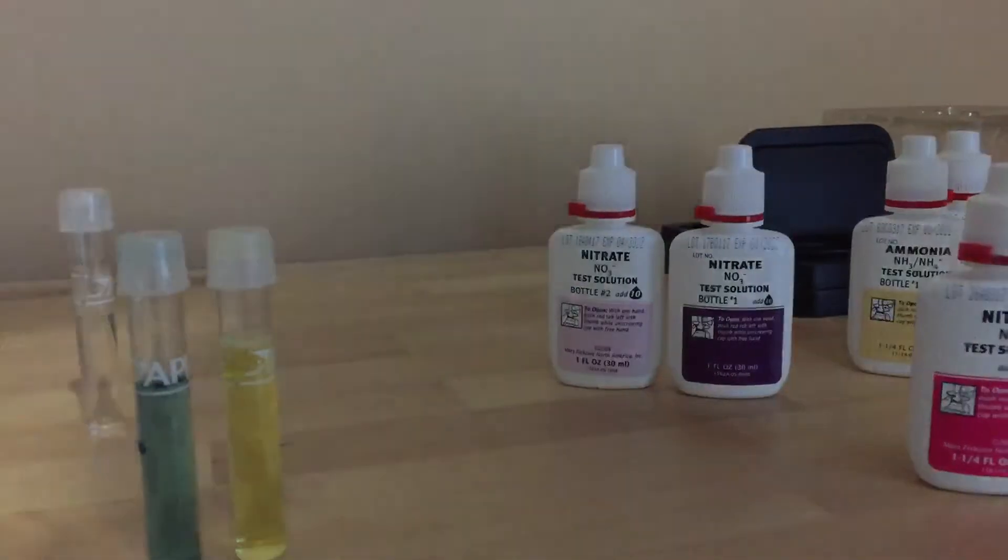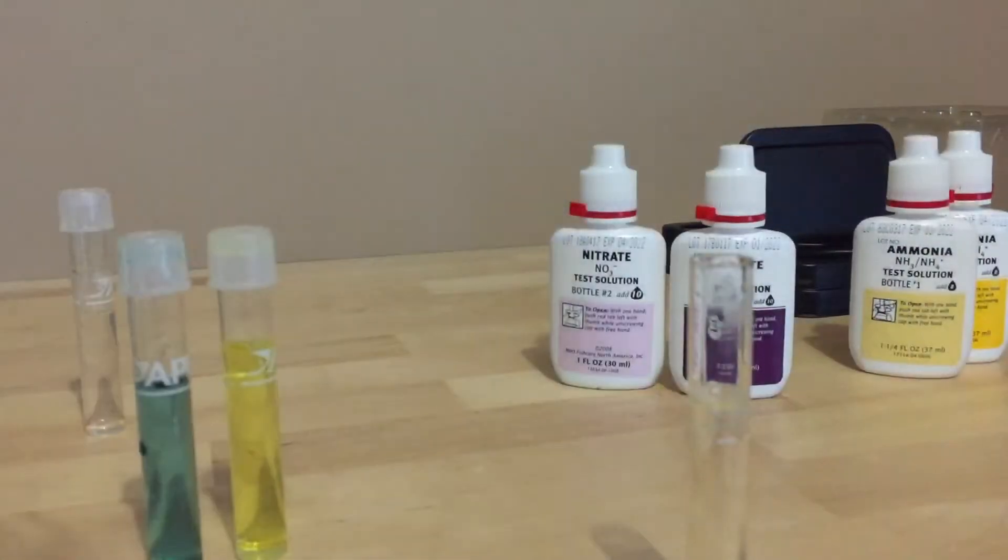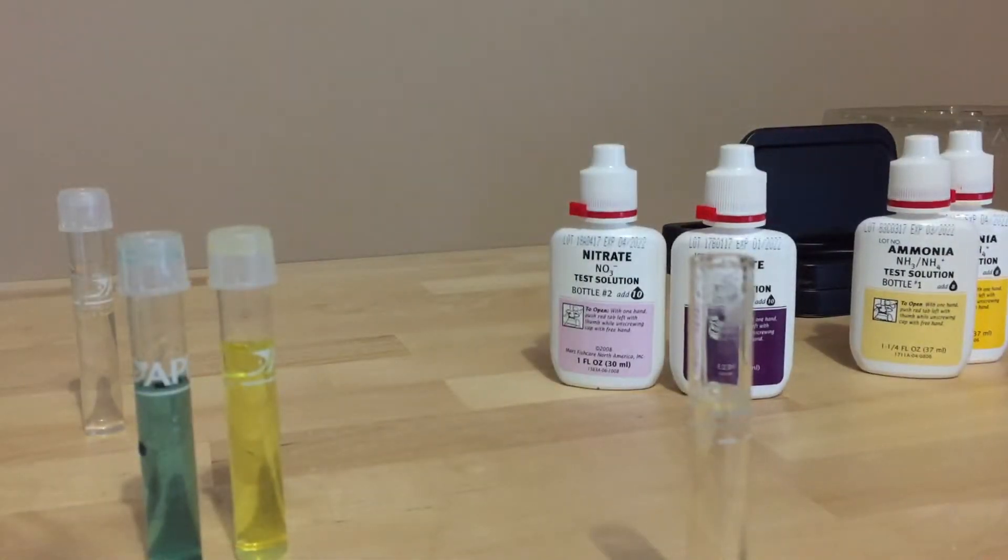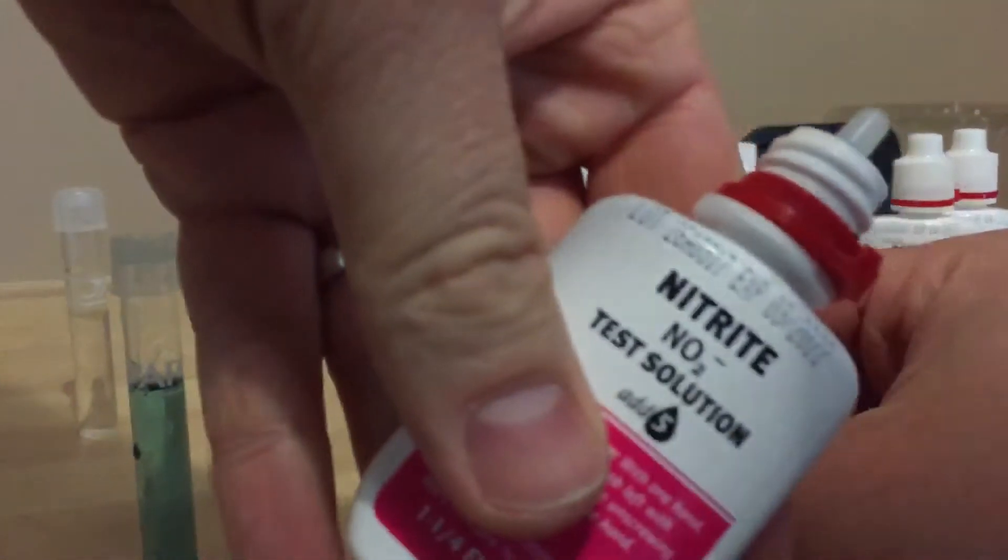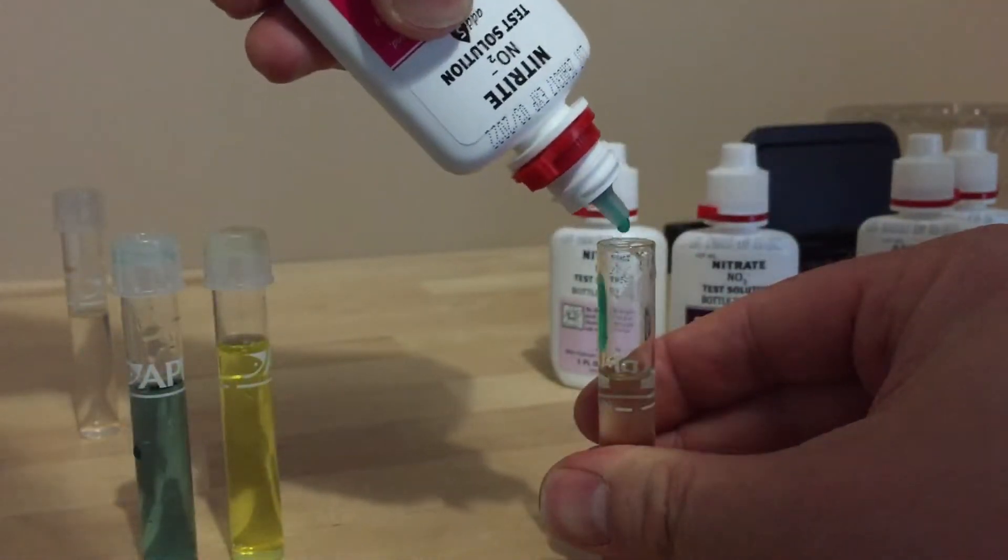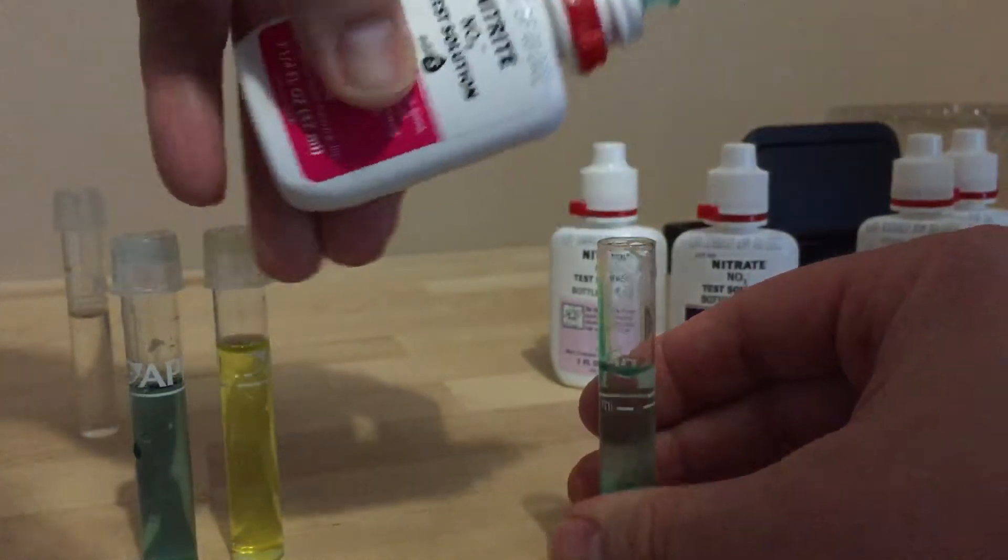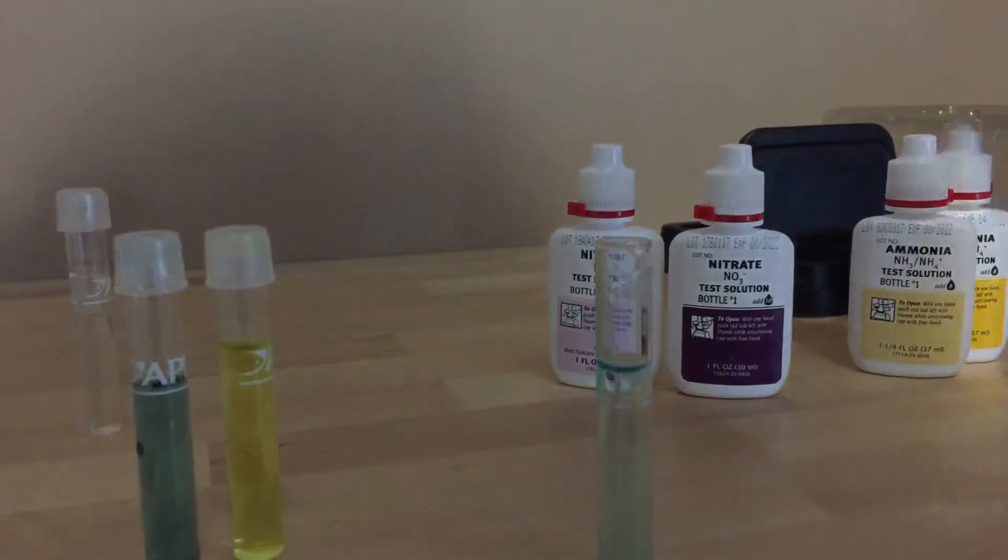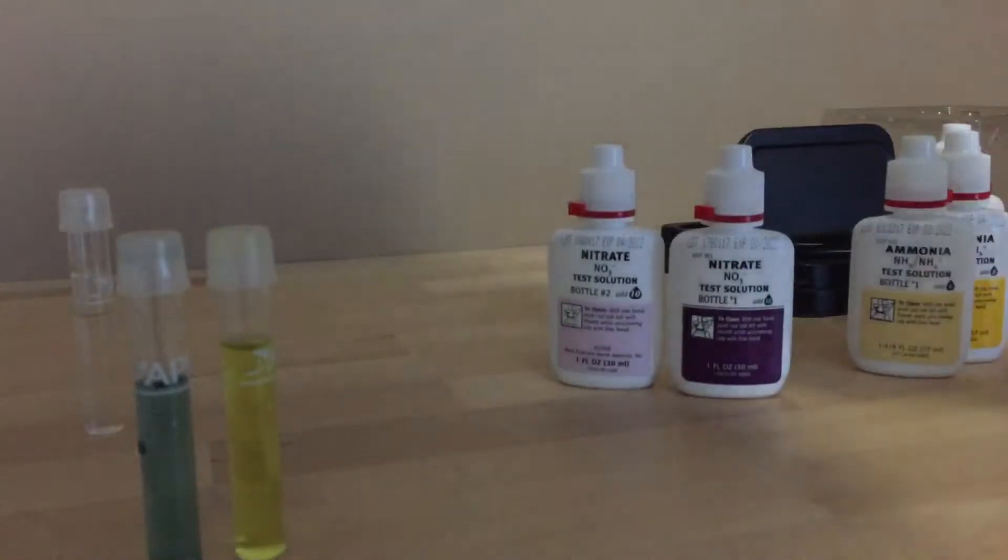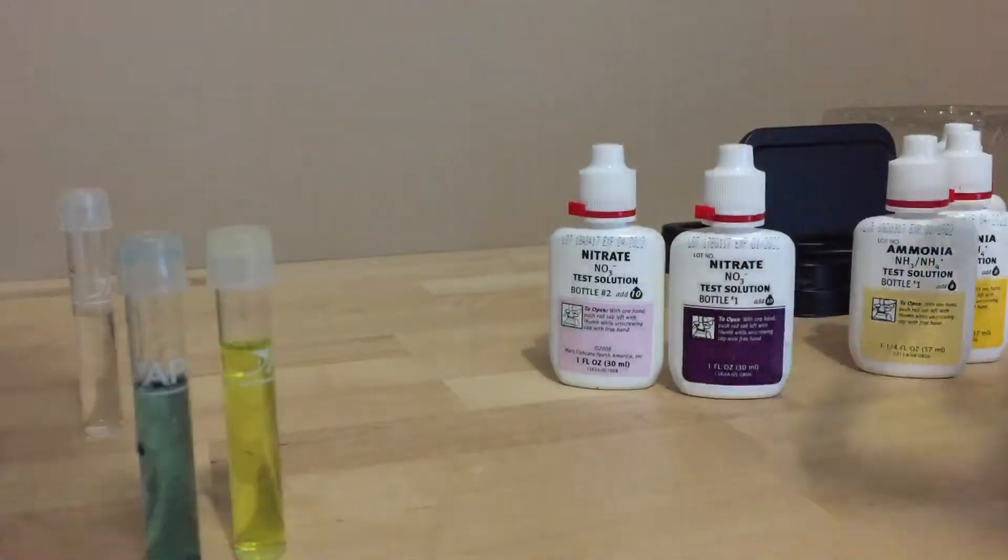And so the next one we'll test for is nitrites. Okay, just shake the bottle and this time you'll see that it says add five. So one, two, three, four, five. And again you just shake this one for five seconds and leave that one.